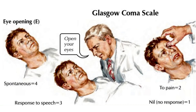Let's break down GCS, starting with how to assess eye opening. If the patient spontaneously opens his or her eyes, 4 points are given. If we say 'Hello Mr. X, open your eyes' and the patient responds to speech and opens his eyes, we give 3 points. If the patient only opens his eyes after a pain stimulus, 2 points are given. If there is no response, 1 point is given. We never give 0 points — 1 is the least we can give.